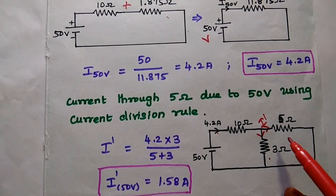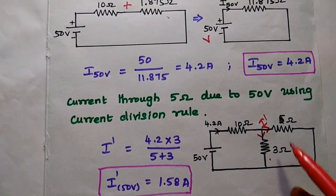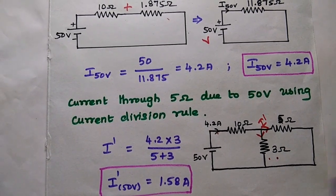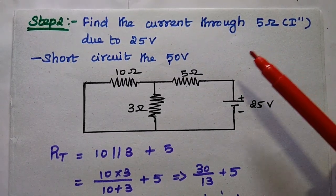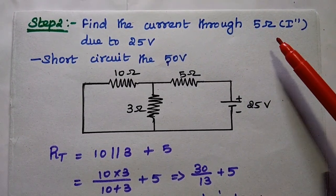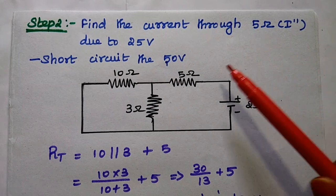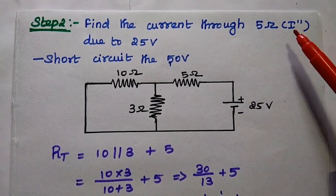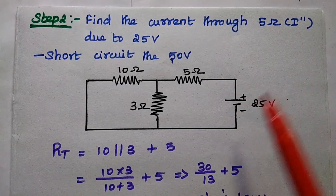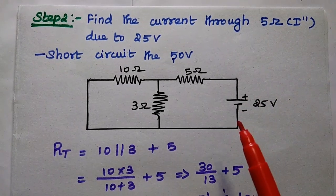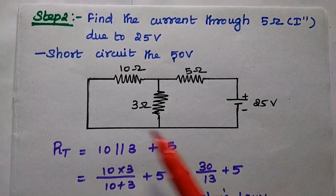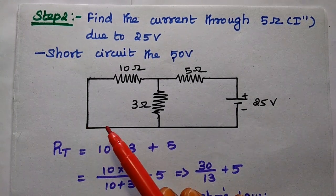In current division, you have to remember that we take the opposite resistance for the calculation. In the next step, we are going to find out the current through the 5 ohm resistor due to 25 volt, represented as I double dash. Here we can consider the 25 volt at the time the 50 volt is short-circuited.